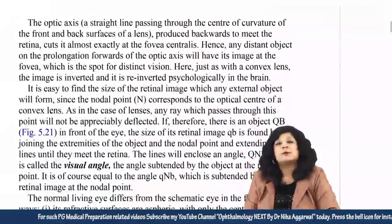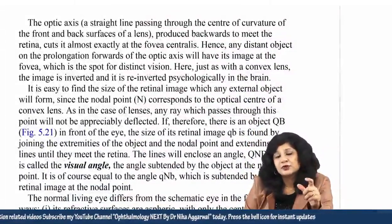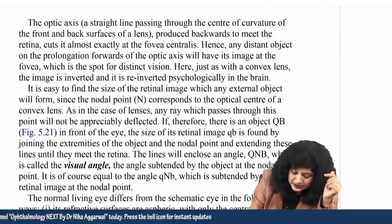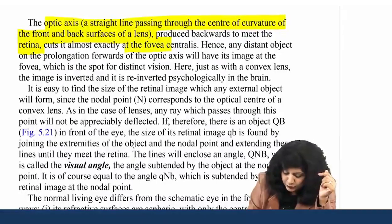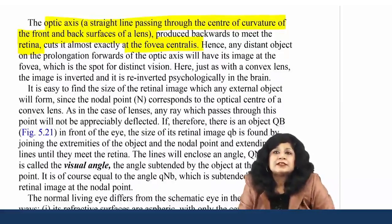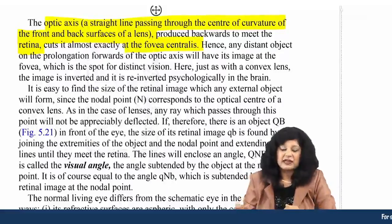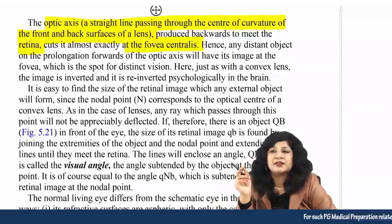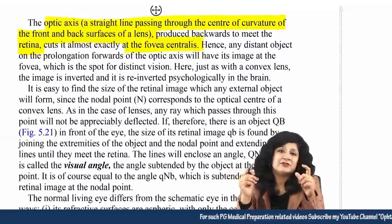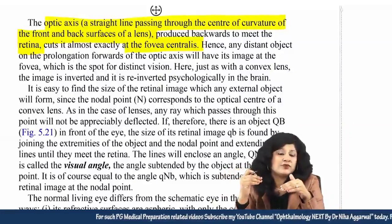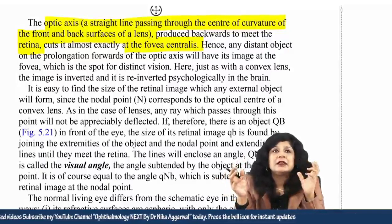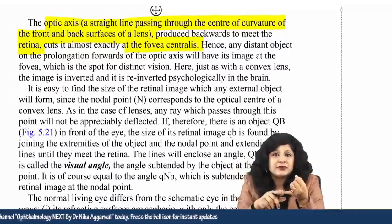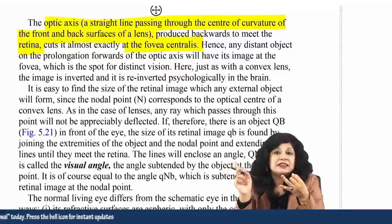The optical axis is the straight line passing through the center of the cornea, center of the lens, and the center of the eyeball — passing through the centers of curvature of the front and back surfaces of the lens and meeting the retina. It cuts almost exactly at the fovea centralis, though in another model the optical axis passes through the retina at a point nasal to the fovea centralis.